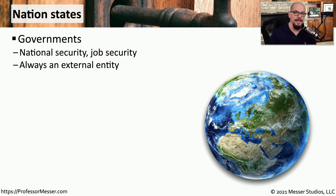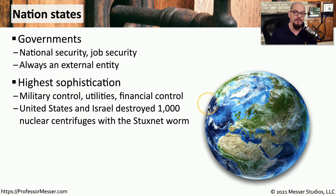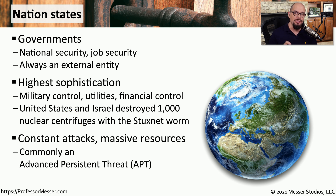A threat actor who is a nation-state is usually a government — typically an organization in charge of national security, and almost always an external government entity. Governments tend to have many resources and can hire the smartest technologists. A good example is the United States and Israel working together to destroy about 1,000 nuclear centrifuges with a worm sent to Iran. That worm connected to a very specific type of centrifuge and caused it to work incorrectly — one example of a government using an APT to gain access and destroy equipment inside another government's facility.